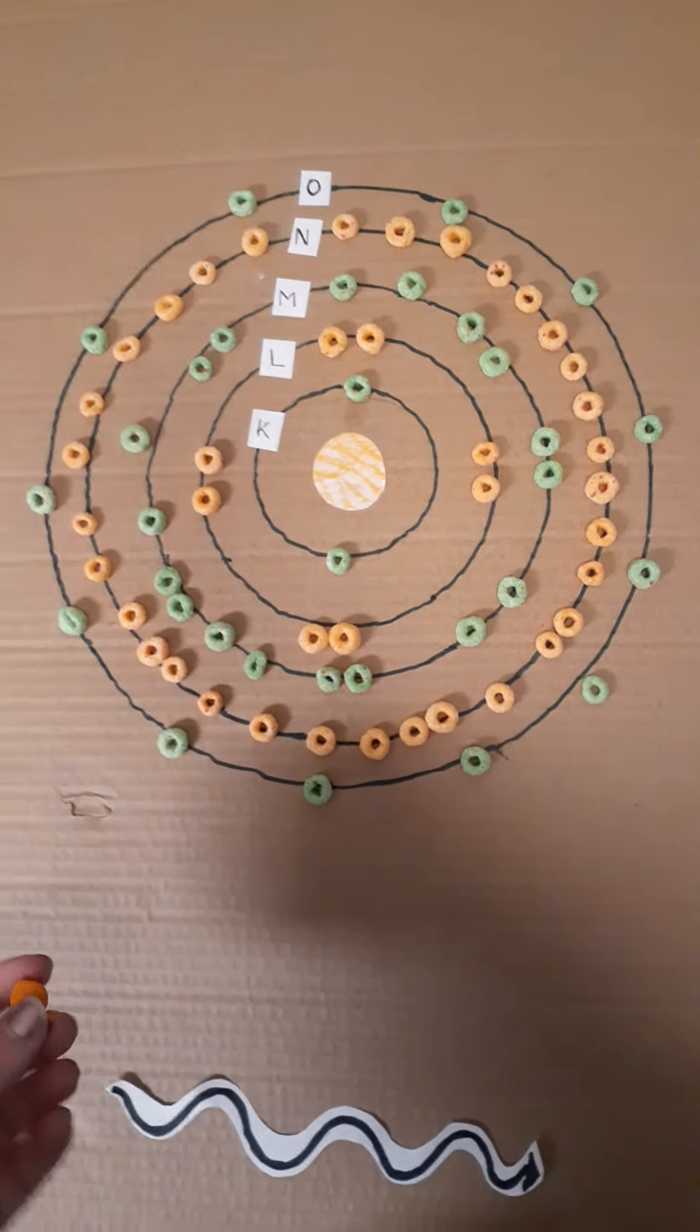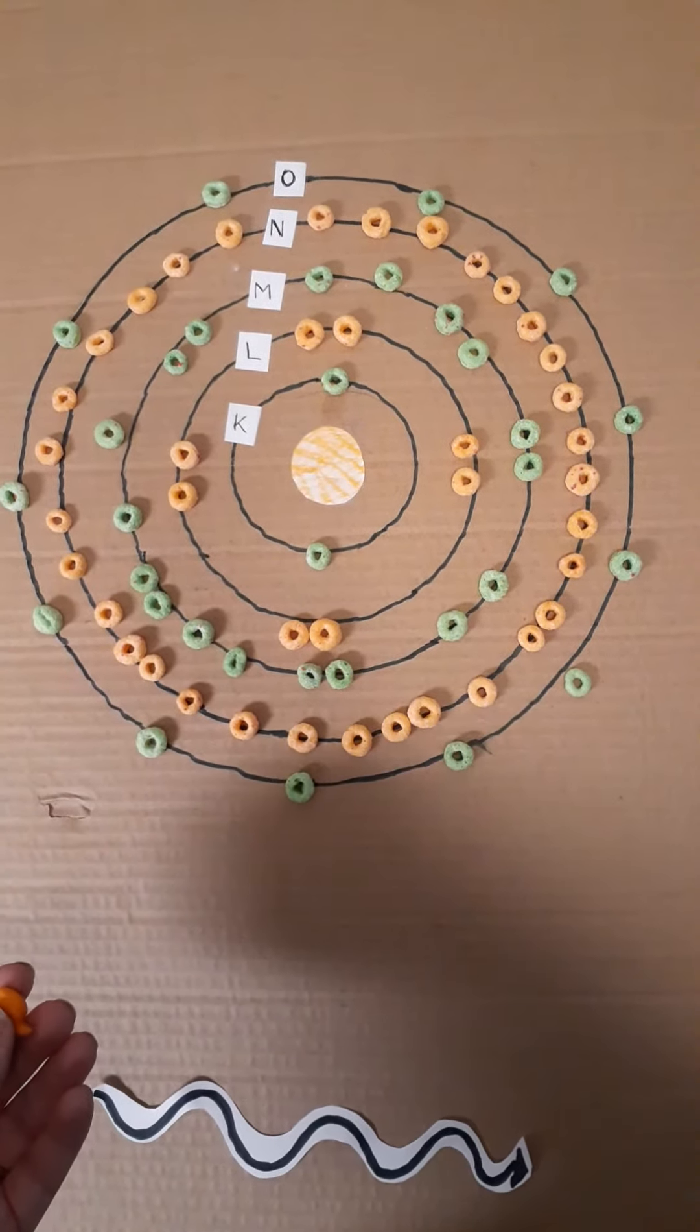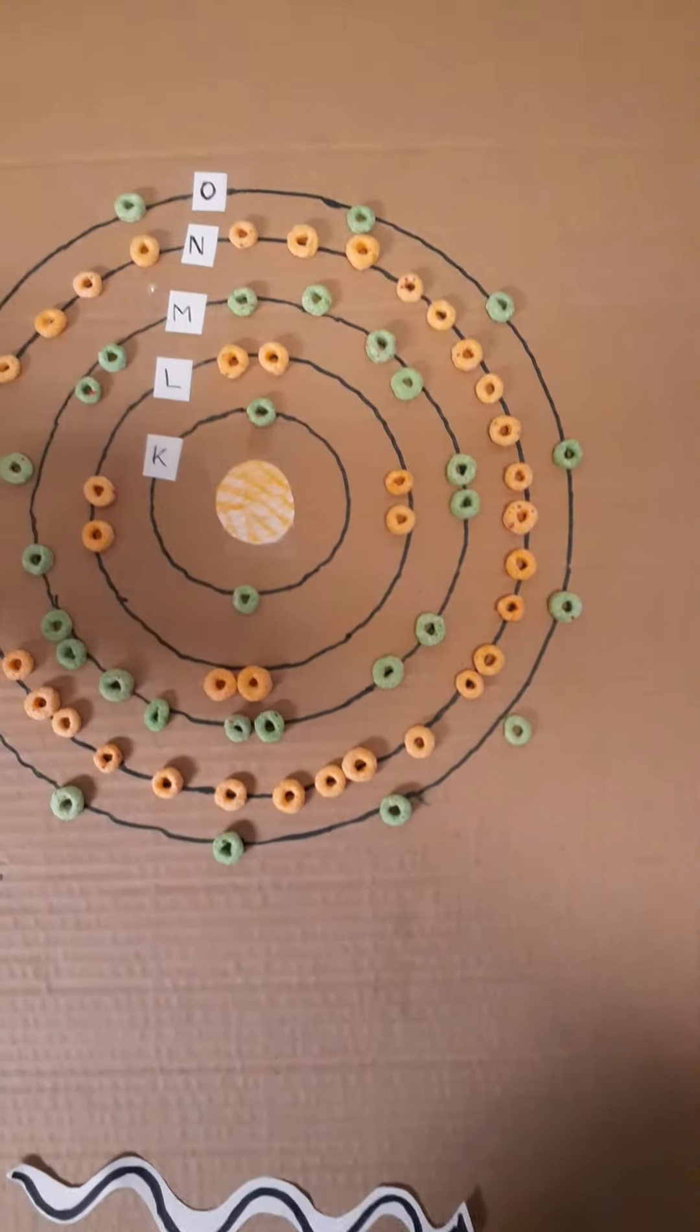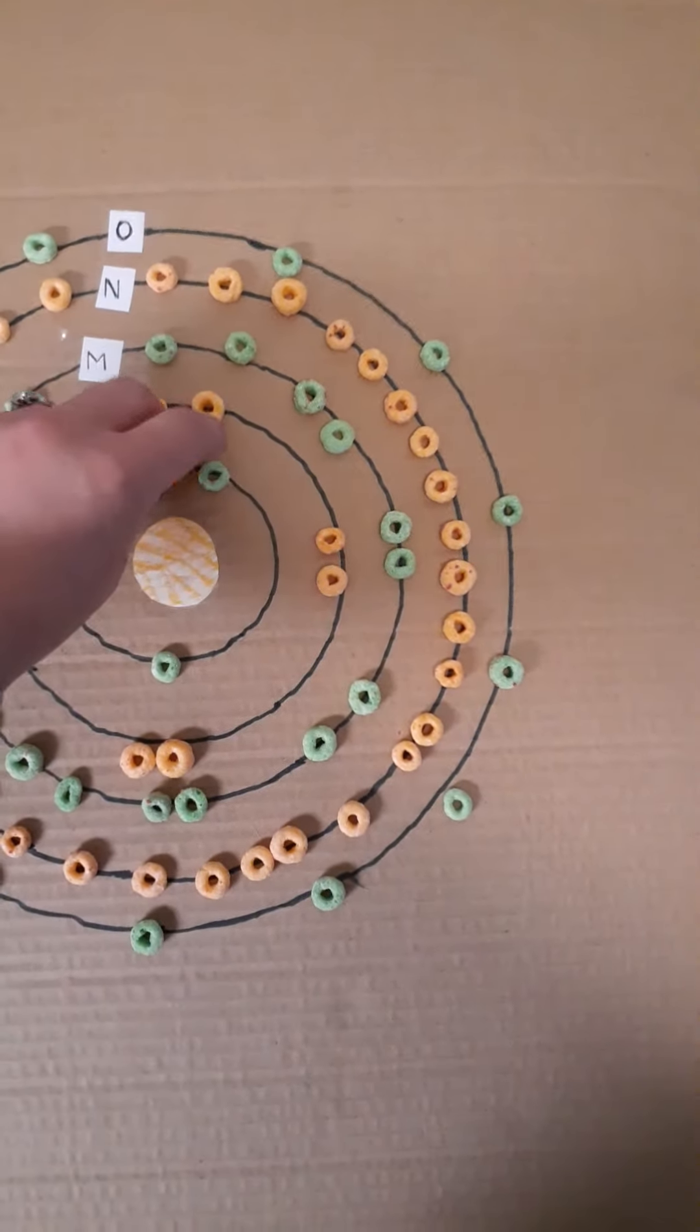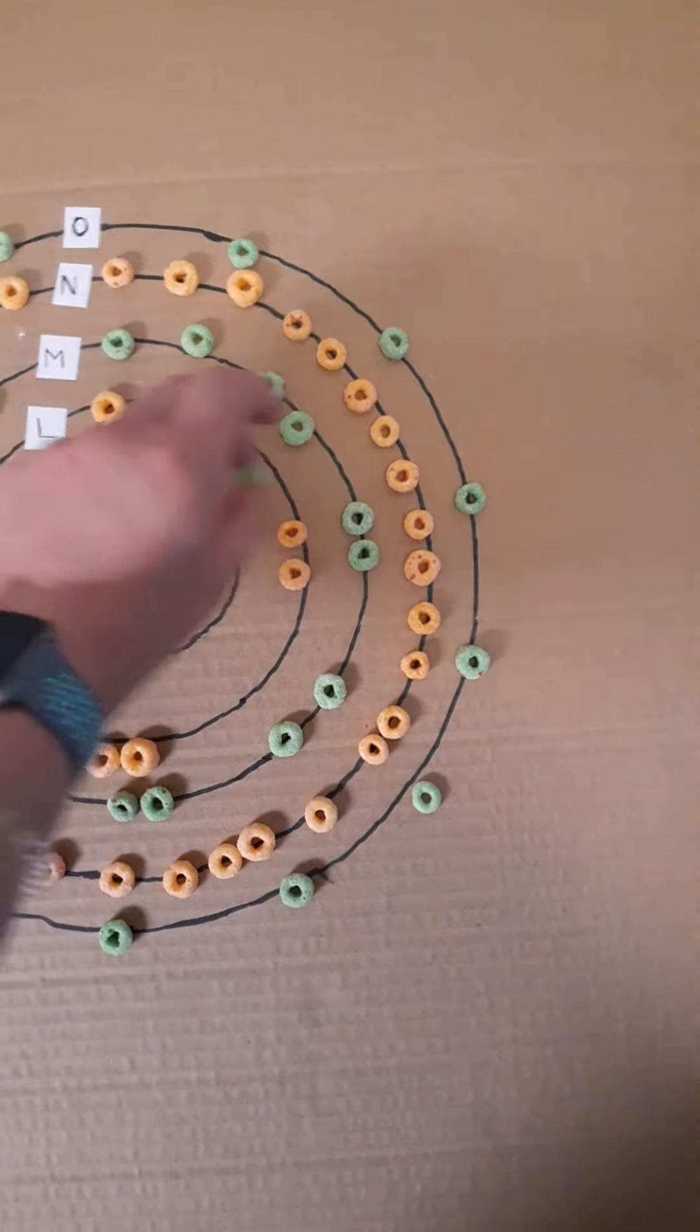This happens when the incident electron has enough energy to knock out an inner shell electron from orbit, which causes the atom to ionize.